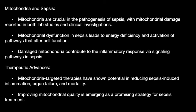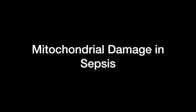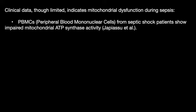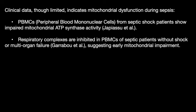Improved mitochondrial quality is emerging as a promising strategy for sepsis management. How does mitochondria get damaged in sepsis? We have some clinical data, though limited, indicating mitochondrial dysfunction in sepsis. Peripheral blood mononuclear cells from septic shock patients show reduced mitochondrial ATP synthesis activity. Respiratory complexes are inhibited in cells of septic patients without shock or even organ failure, suggesting early mitochondrial impairment can occur even in the absence of organ failure.